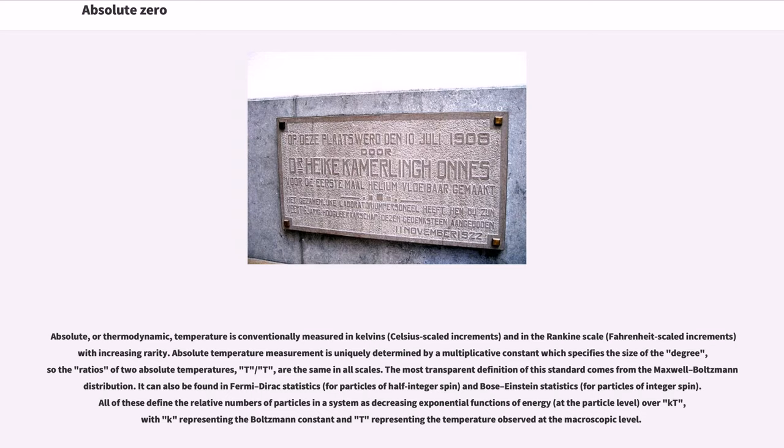The most transparent definition of this standard comes from the Maxwell-Boltzmann distribution. It can also be found in Fermi-Dirac statistics, for particles of half integer spin, and Bose-Einstein statistics, for particles of integer spin. All of these define the relative numbers of particles in a system as decreasing exponential functions of energy (at the particle level) over kT, with k representing the Boltzmann constant and T representing the temperature observed at the macroscopic level.